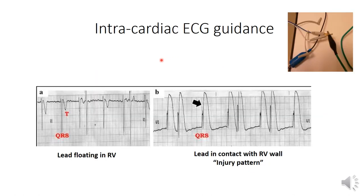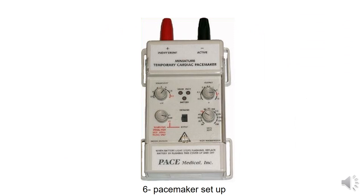Another guidance method is intracardiac ECG, by connecting the distal end of the pacing lead to an ECG electrode. Here is the ECG pattern when the lead is floating in the RV cavity, and when we get an injury pattern — ST-segment elevation in the repolarization phase — this indicates that the lead is in contact with the RV wall. Finally, we move on to the pacemaker setup.